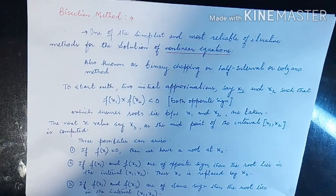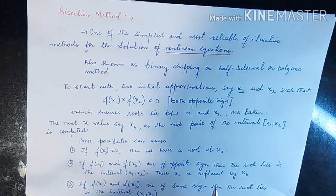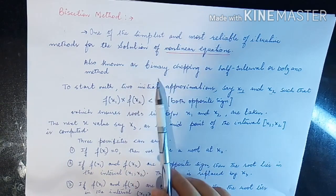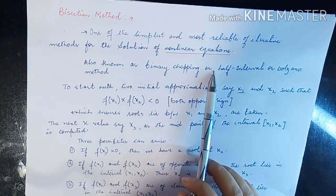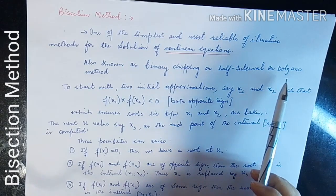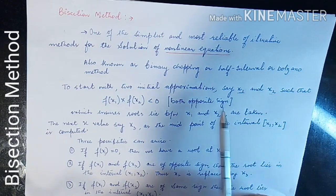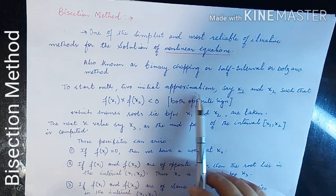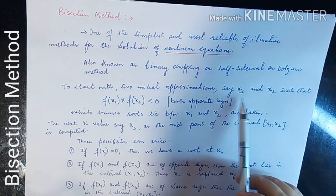Hello students, today we are going to learn the bisection method. It's a very simple method used to solve nonlinear equations. This method is also known as binary chopping, half interval method, or Bolzano method.